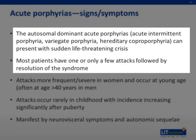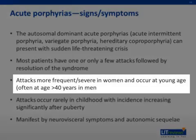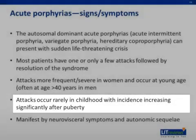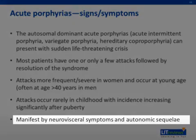Symptoms from the acute porphyrias usually occur as sudden attacks related to a variety of underlying factors. These can be life-threatening, and a high degree of suspicion is required to diagnose acute porphyria in a timely fashion. The disease is generally more severe in women, and neurologic attacks occur rarely in childhood. Acute porphyria is generally manifest as neurovisceral symptoms and autonomic sequelae, which will be outlined in the next few slides.